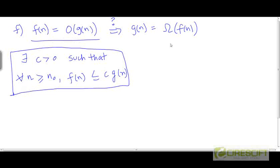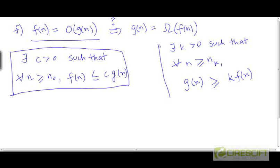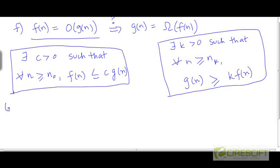And we are asked to prove whether there exists a constant k greater than 0 such that for all n larger than some threshold n₀, g will be bounded from below by a constant multiple of f. So if you are given this, does this necessarily hold?